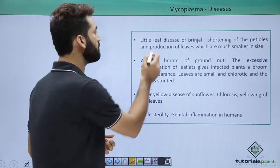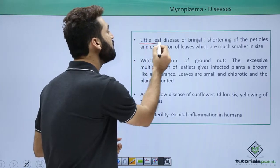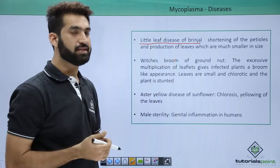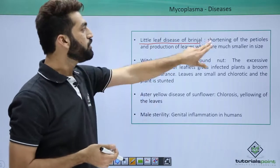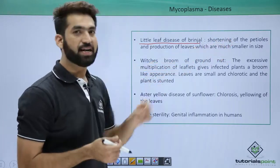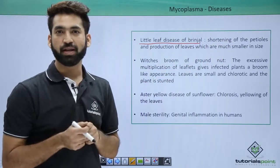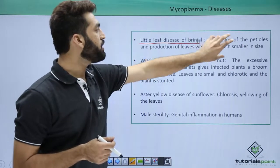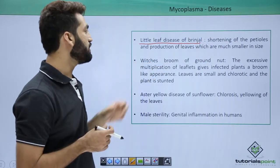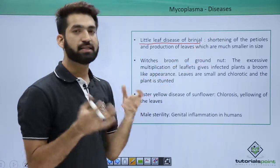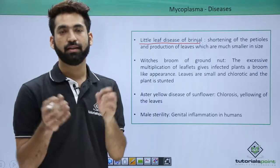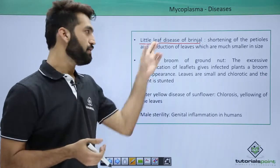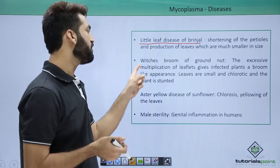The very important disease that we can talk about is little leaf disease of Brinjal. What happens in this disease is shortening of petioles — petioles are the structures that support the leaf. The petioles become shortened and smaller leaves are produced. This is one among the mycoplasma diseases.